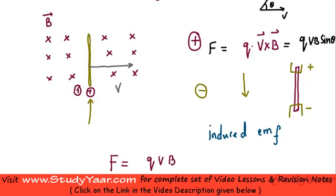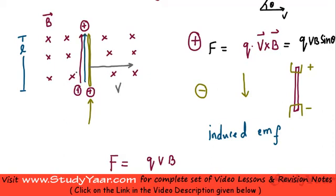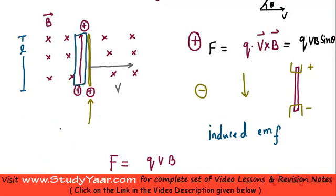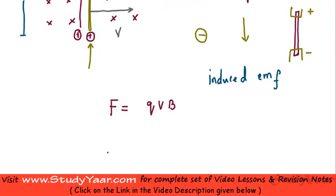A particle which is at one end has now moved to the other end. Let's say the length of the conductor is l meters, so the particle has displaced l meters. Whenever work is done, it is force multiplied by displacement in the direction of the force. In our case, the particle displaced l meters and the force acting on it is qvB, therefore the work done by this particle, W, is...